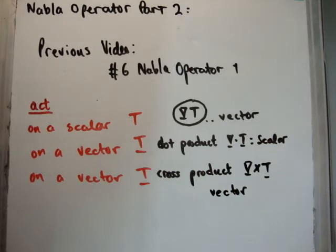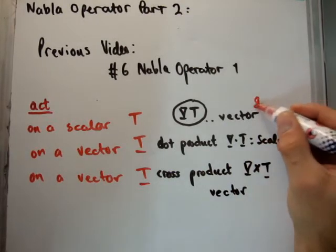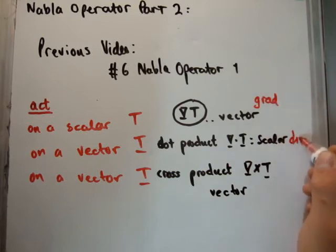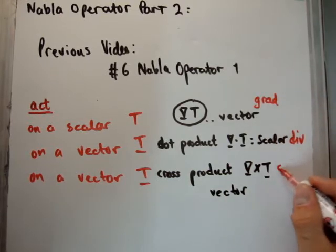Now, for reasons that might become clear later on, we call this the grad or the gradient, we call this the divergence or the div, and we call this the curl.